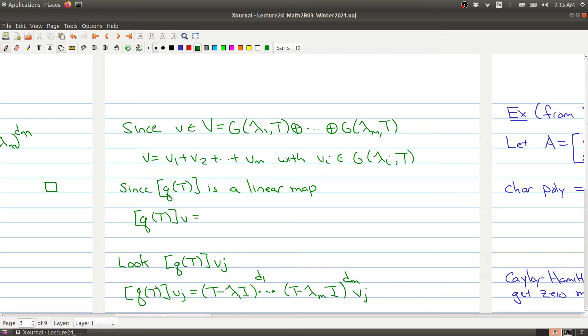Now we're interested in this object q(T). This is a linear map, so when we apply it to v, because this is a sum, we can break it up into its parts. So q(T) evaluated at v is the same as q(T) evaluated at v₁ plus q(T) evaluated at v₂ and so on, adding them all up.